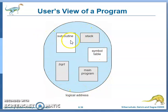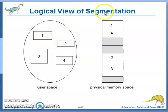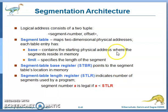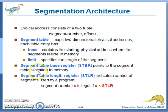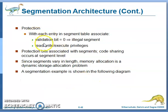Segmentation treats logical units such as the main program, procedures, functions, methods, objects, stacks, and arrays each as a segment. For example, a logical address space can be divided into five segments: subroutine, stack, symbol table, main program, and a square root function. The segmentation architecture uses a segment table that maps two-dimensional physical addresses. Each table entry has a base and a limit. The segment table base register points to the segment table location in memory, and the segment table length register indicates the total number of segments used by a program.